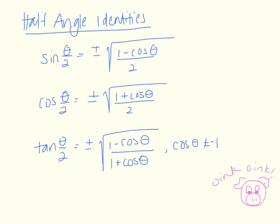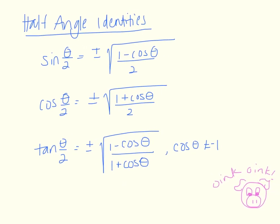Just like we have double angle identities, we also have half angle identities, which take an angle theta and multiply it by one half. These come from manipulating our double angle identities and solving for sine, cosine, or tangent. Sine of theta over two equals plus or minus the square root of (one minus cosine theta) over two. Cosine of theta over two equals plus or minus the square root of (one plus cosine theta) over two. Tangent of theta over two equals plus or minus the square root of (one minus cosine theta) over (one plus cosine theta), which is undefined when cosine equals one.